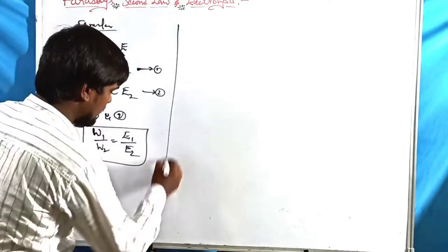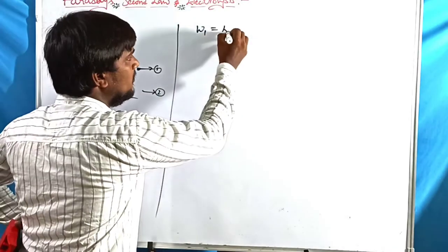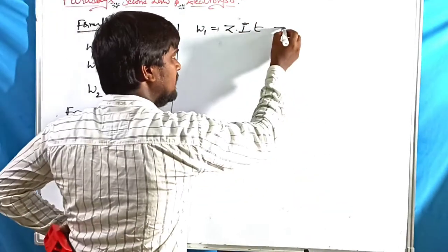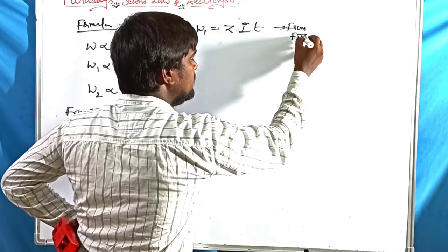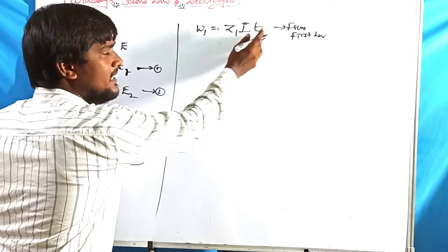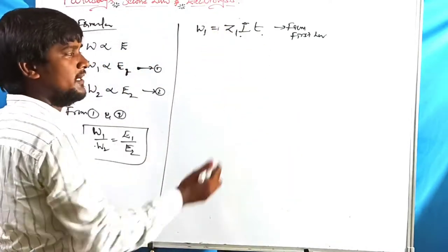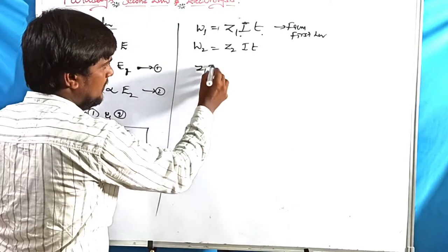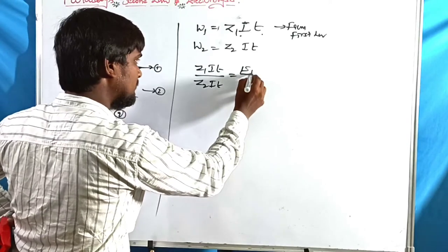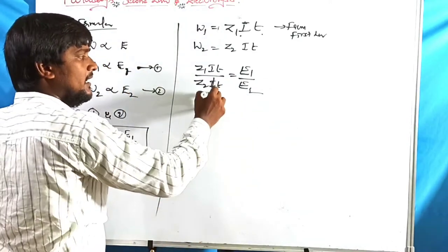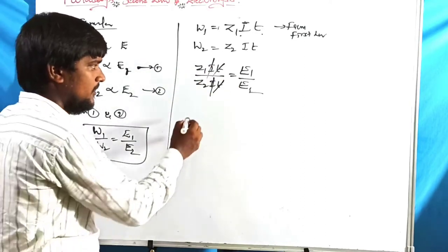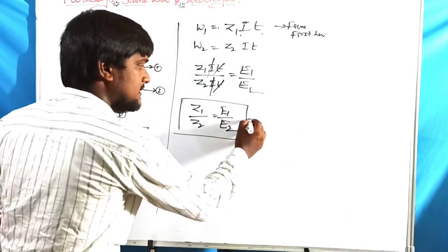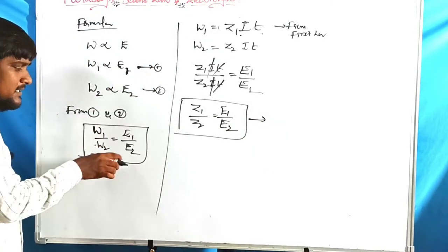From Faraday's First Law, W = Z × I × T. Since current I and time T are the same for both cells, W₁ = Z₁ × I × T and W₂ = Z₂ × I × T. Substituting, Z₁ × I × T divided by Z₂ × I × T equals E₁ / E₂. Since current and time cancel, we get Z₁ / Z₂ = E₁ / E₂.